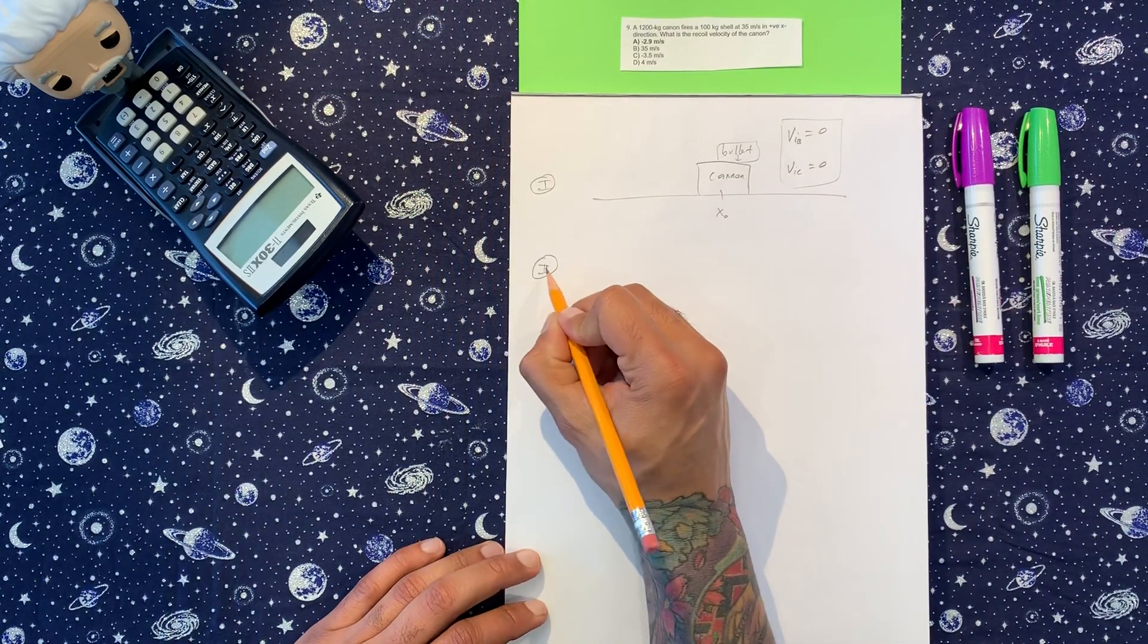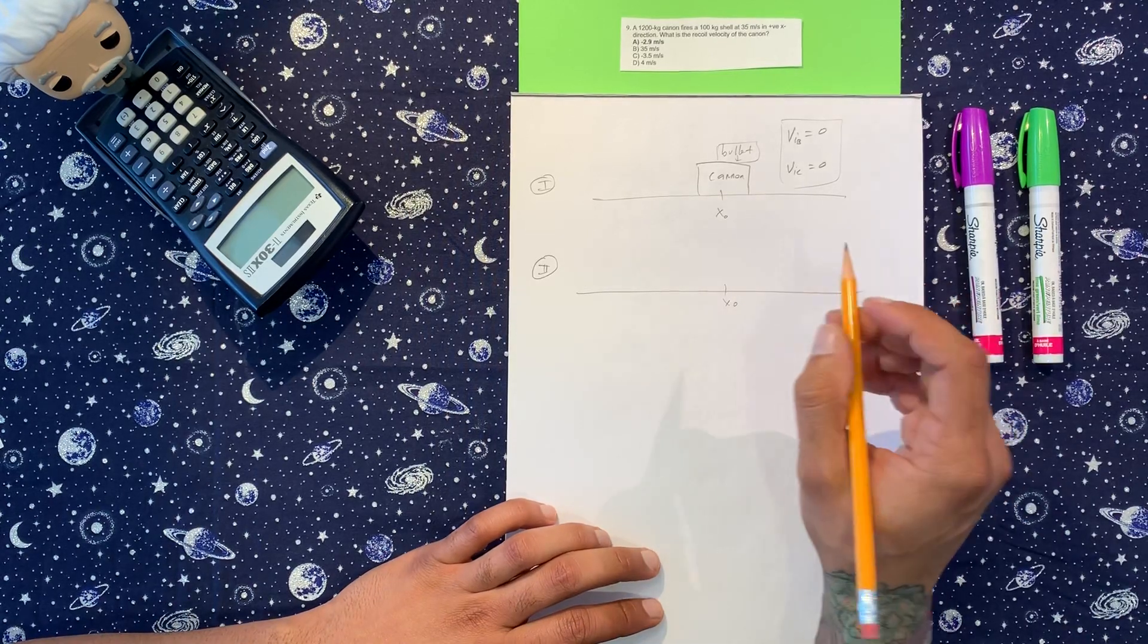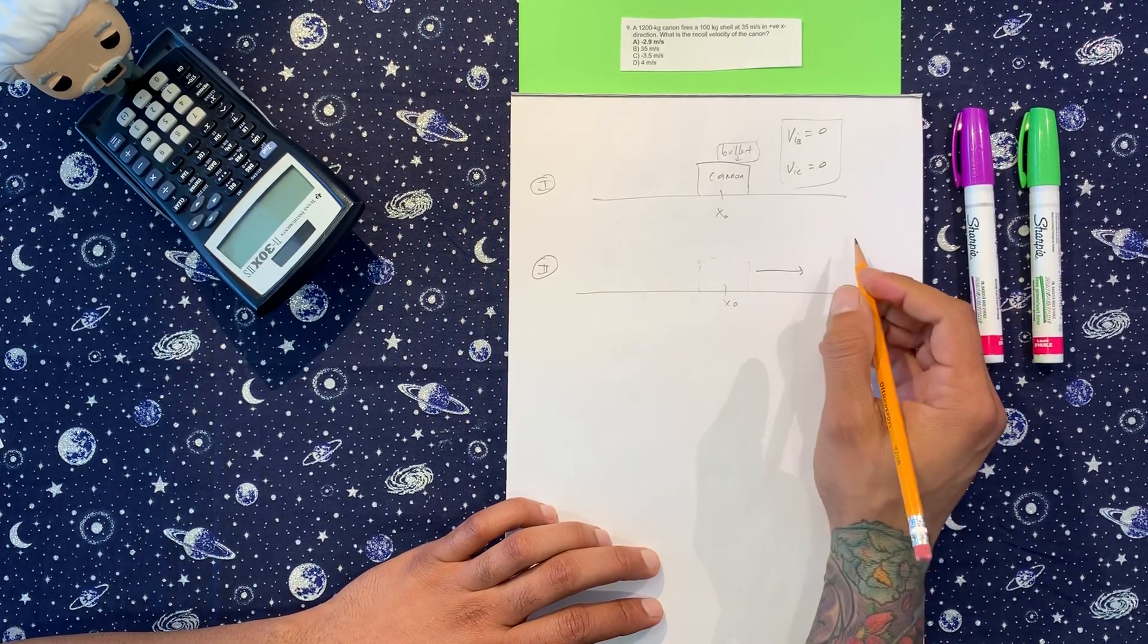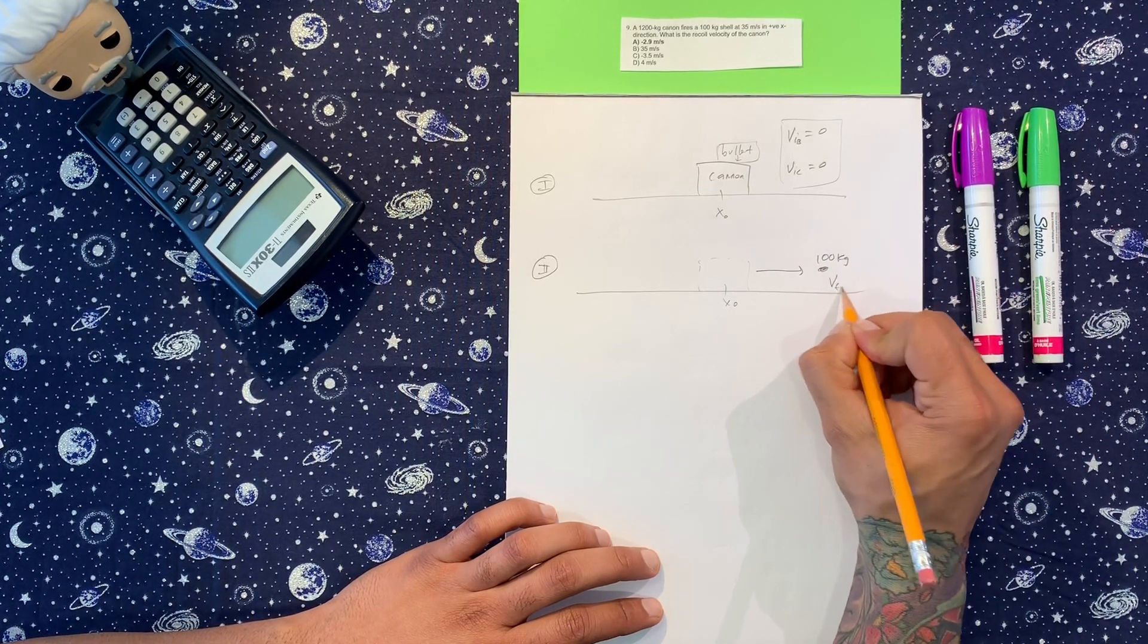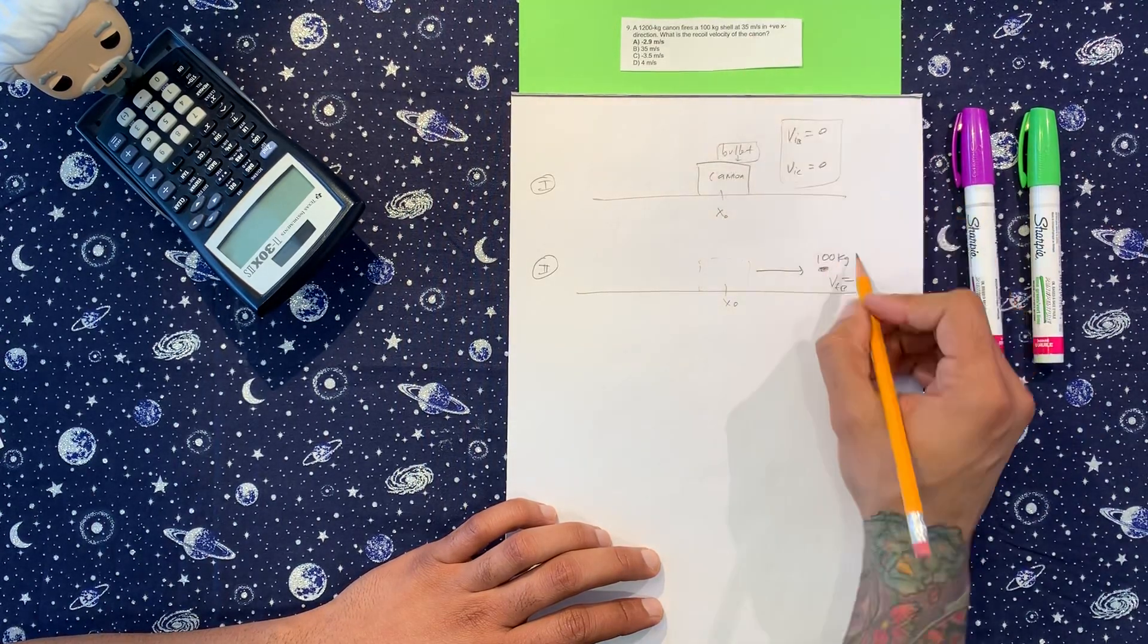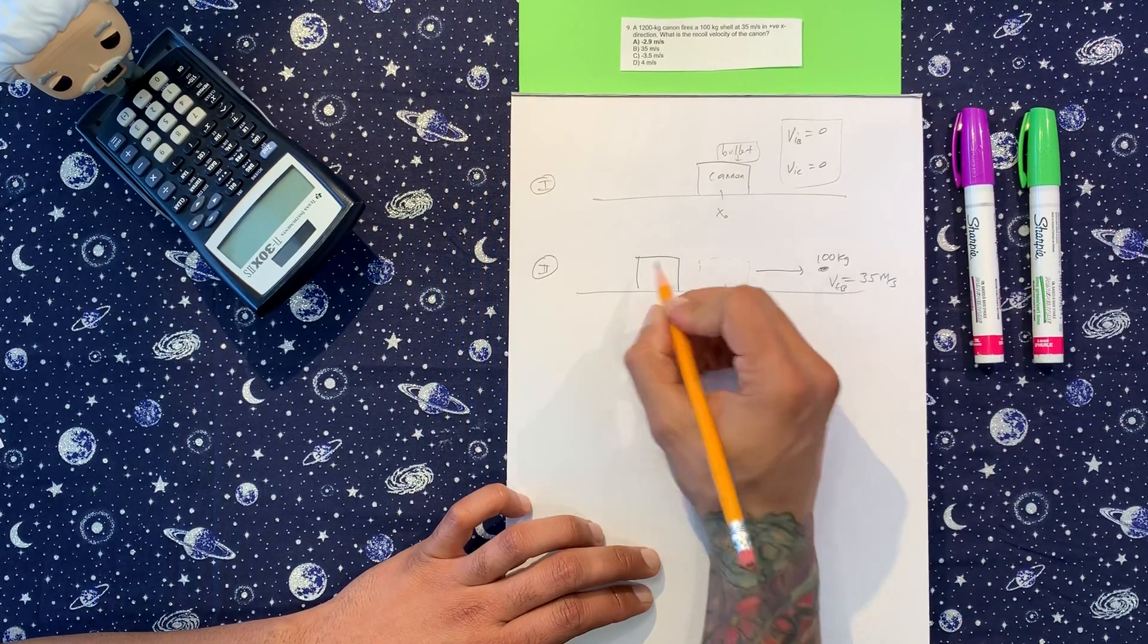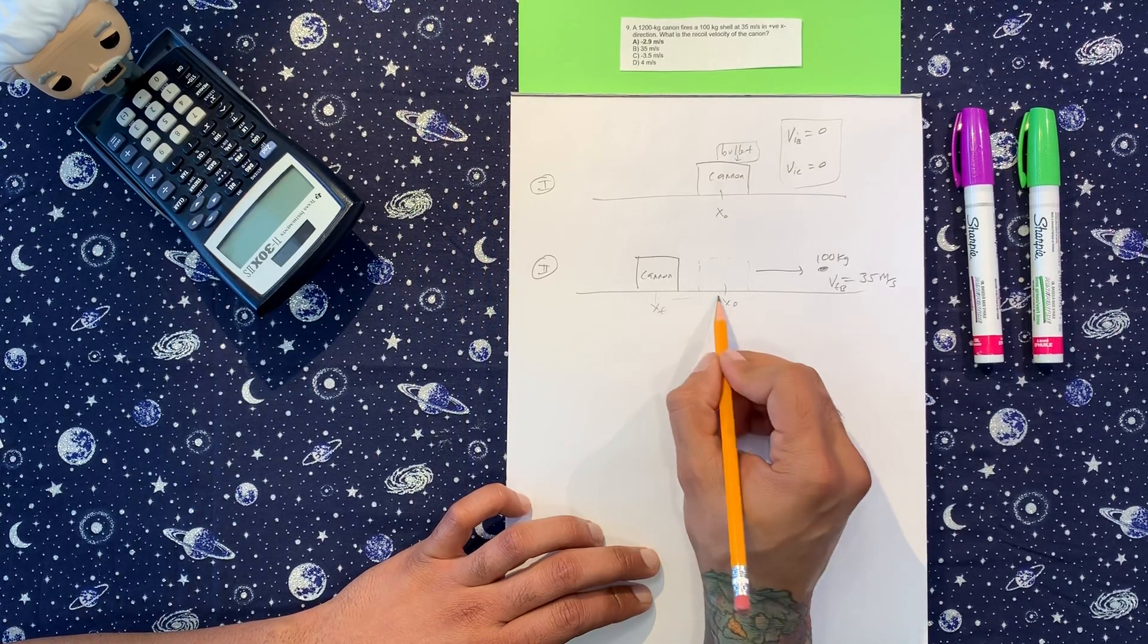Now for the second scene of this horror film, we have the cannon fires. So this is the cannon here. It fires the bullet that way, right? The 100 kilogram bullet, and the velocity that it's traveling at, which is the final one, is equal to 35 meters per second. So that's the distinction you got to make.